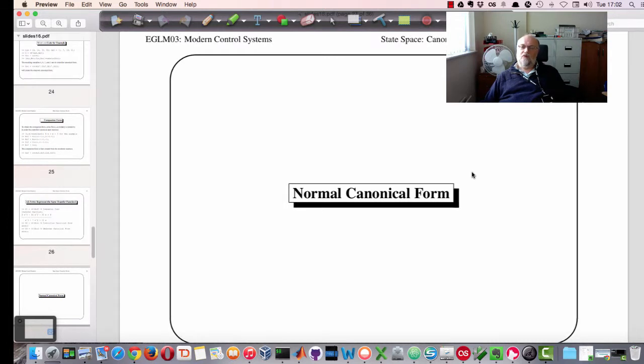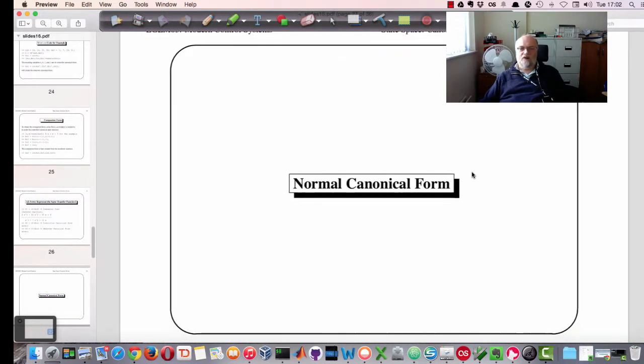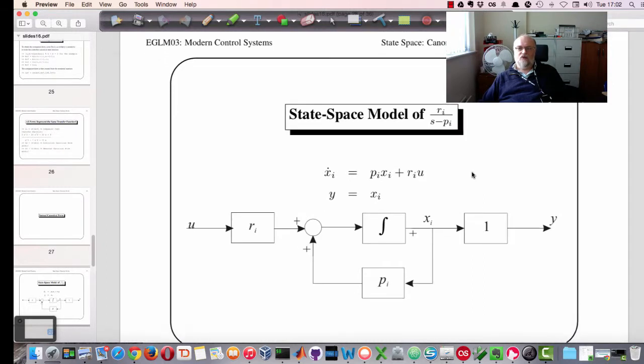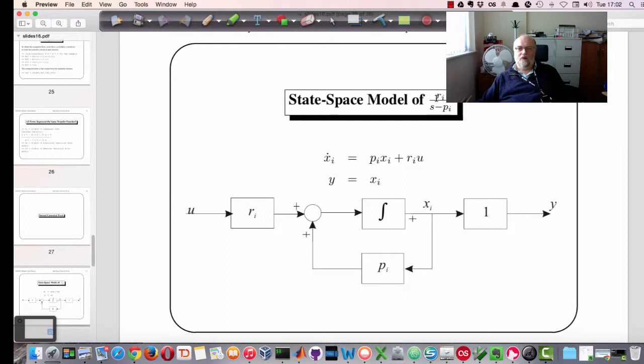So those are some canonical forms. Another useful one, which makes deriving the system response easiest, is what's called the normal canonical form. This basically takes advantage of ideas of eigenvalues and pole values. So if we take a simple model of a single pole, Ri over s minus pi, then this is how we would represent that as a differential equation. First order differential equation with one integrator in the block. The p would be in the feedback loop. And the Ri would be in the input, and it would be one on the output. And this format is the form you'd get if you expanded your transfer function into partial fractions, providing there were no repeated roots or complex roots. So Ri over s minus pi, that's the residue format that you get when you form a partial fraction expansion.